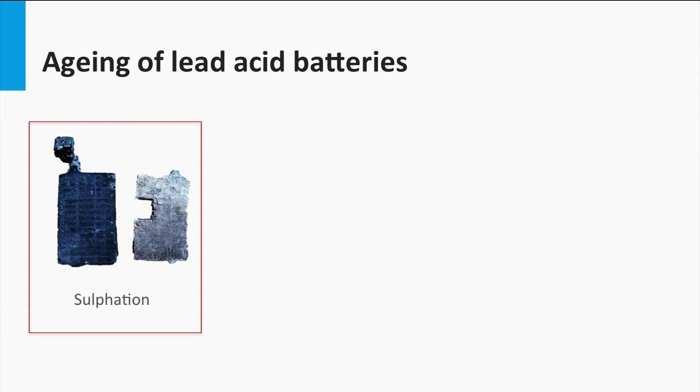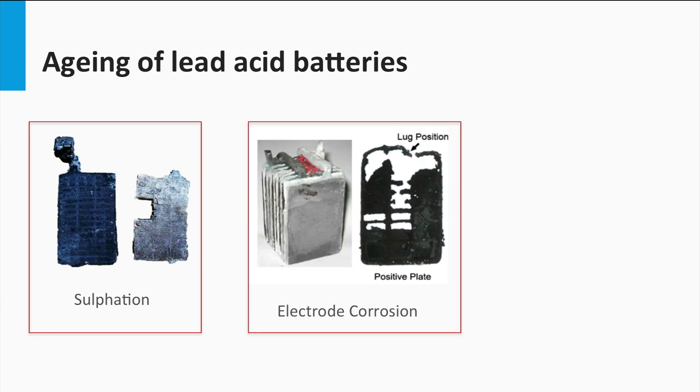Sulfation is one of the major causes of aging. Insufficient recharge after discharges causes sulfate crystals to grow, which cannot be completely transformed back into lead or lead oxide. Thus the battery slowly loses its active material mass and therefore its discharge capacity. Corrosion of lead grid at the electrode is another common aging mechanism. This leads to increased grid resistance due to high positive potentials.